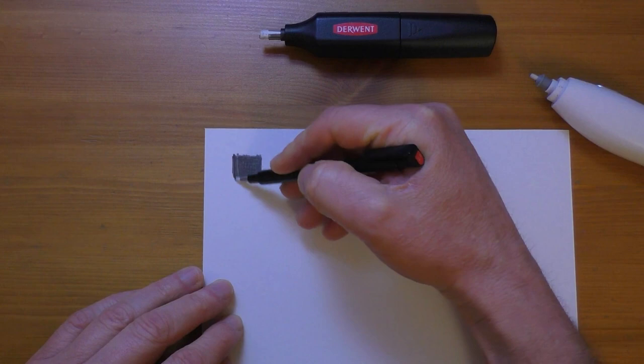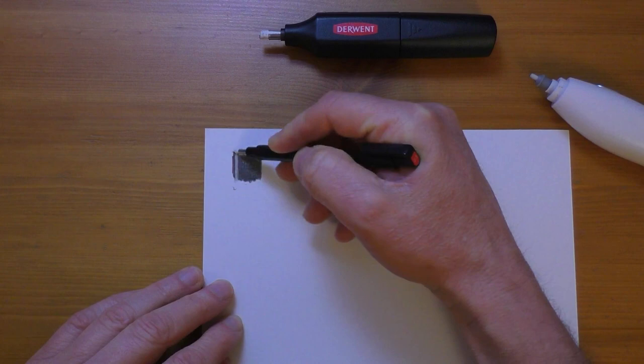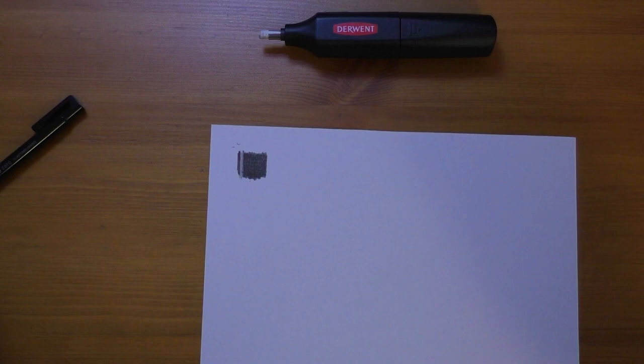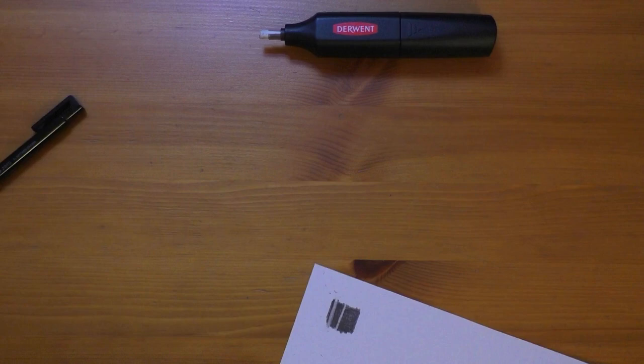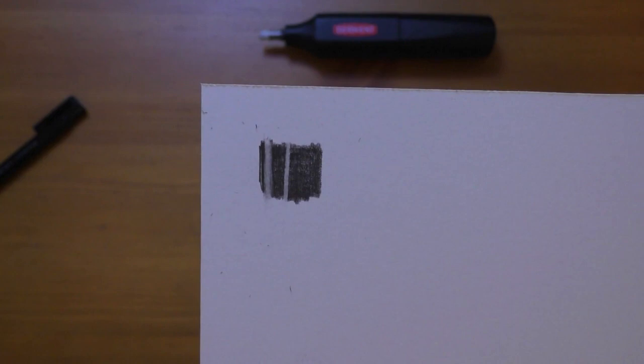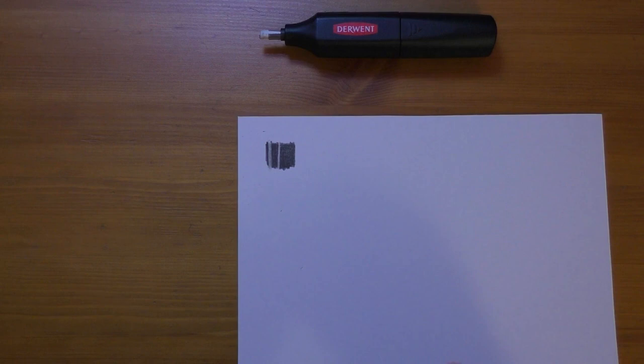For getting thin lines, yes the Tombow mono will do that, but it does take some work. You have to rub several times a lot and you still can't get it back to clean white paper. But with this, it's a lot cleaner, almost back to clean white paper and a lot thinner, the line's a lot thinner.